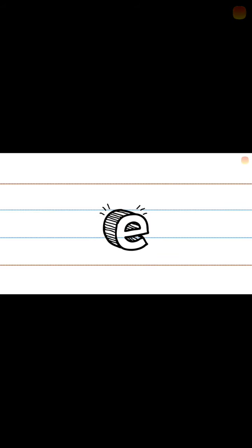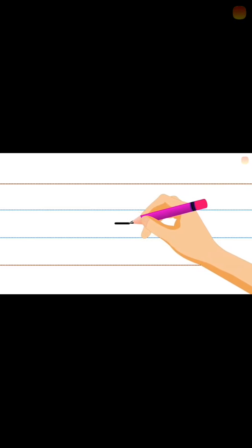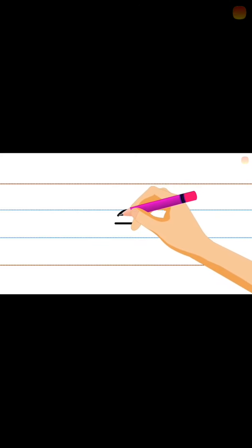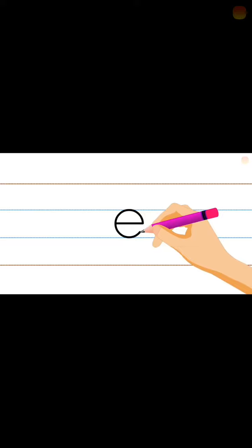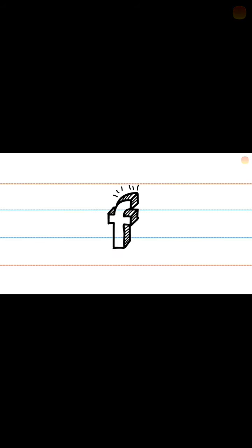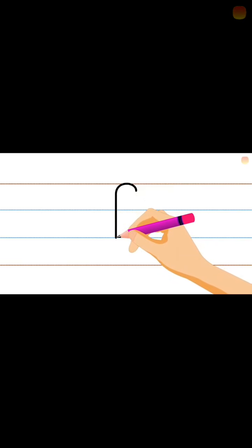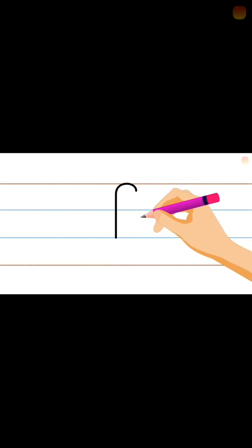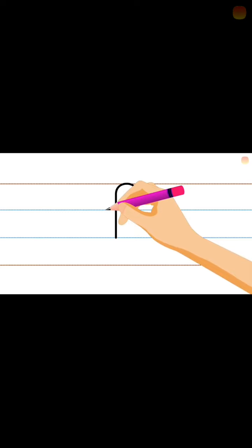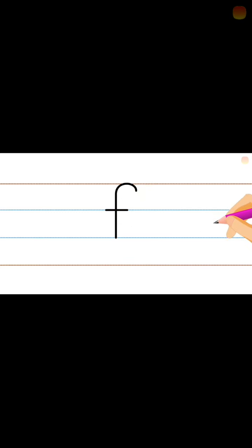Next, small e. How to write? Start below the middle. Make a middle slanting line and make a curve. Continue making the bottom line. Next, e after f. How to write f? Start from the top making a curve line. Continue the standing line. Just below the top curve, add a sleeping line. Very good.